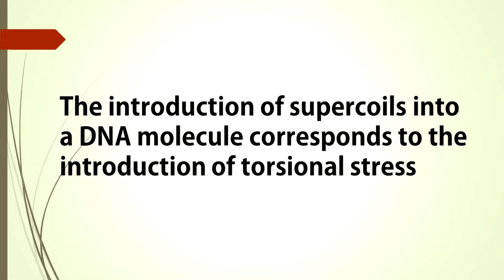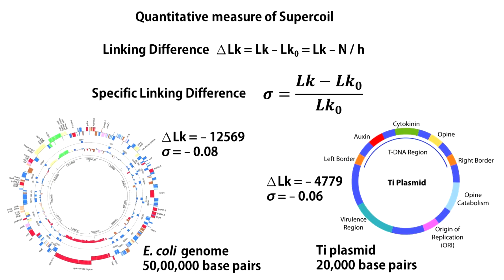The introduction of supercoils into a DNA molecule corresponds to the introduction of torsional stress. If you have two DNA molecules of different lengths and you introduce identical linking number in each of them, the smaller DNA will have more torsional stress than the larger one. So it is important to normalize their linking number difference by their respective LK0 values. This parameter is called the specific linking difference, and it gives some measure of the extent of supercoiling that can be used for comparisons between DNA molecules.